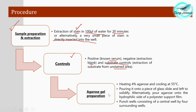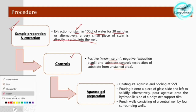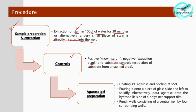For agarose gel preparation, heat 4% agarose and cool it to 55°C, then pour it onto a glass slide and allow it to solidify. Alternatively, pour the agarose onto the hydrophilic side of a polyester support film.